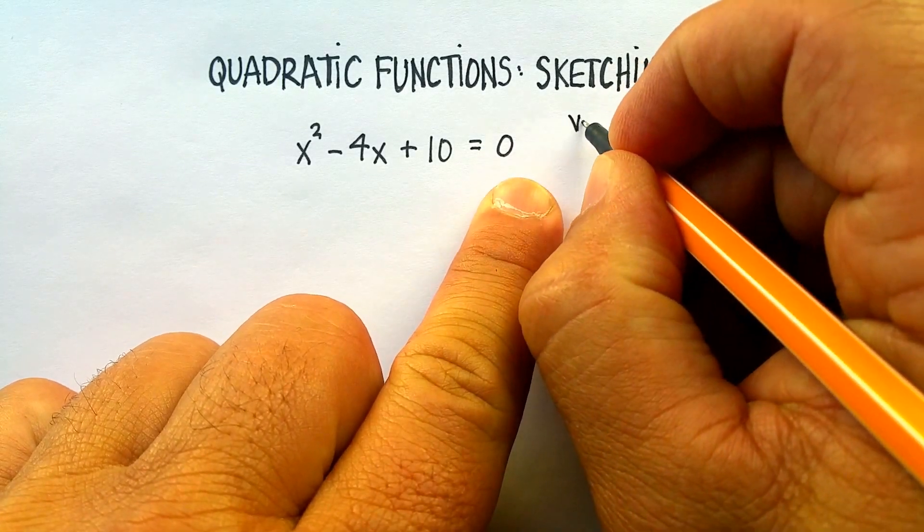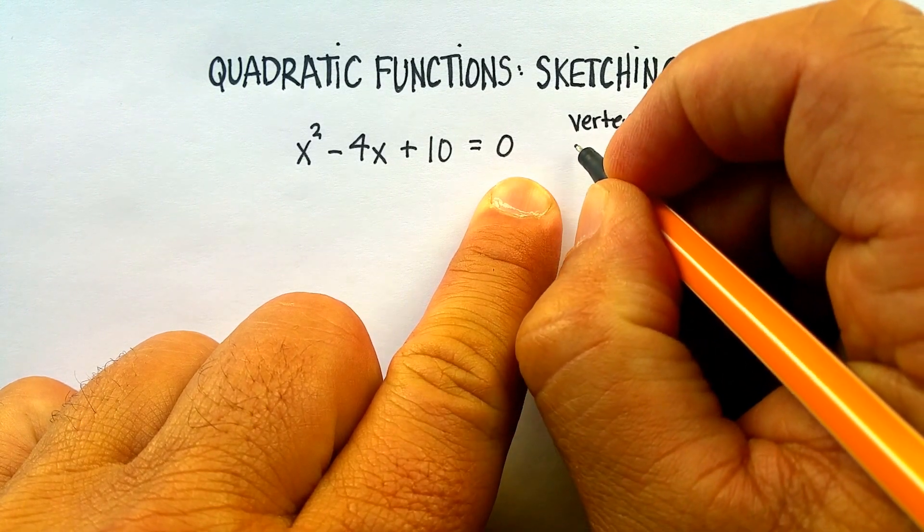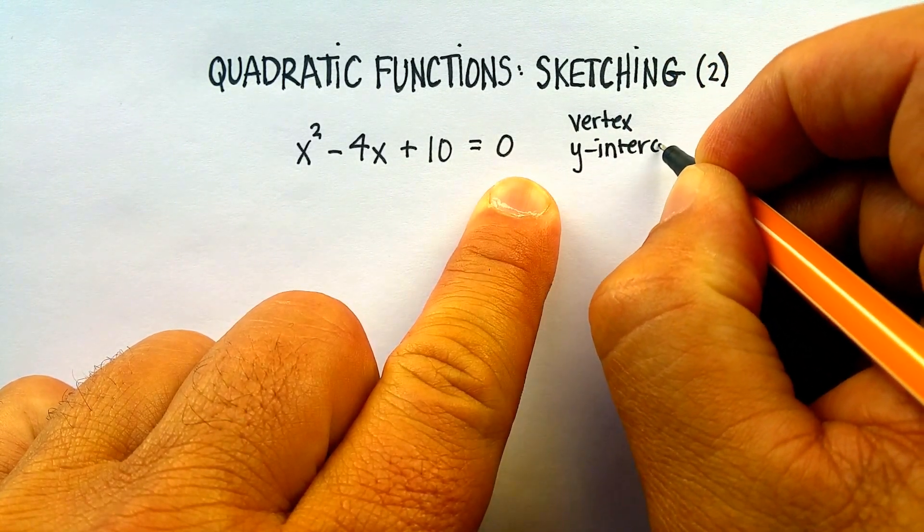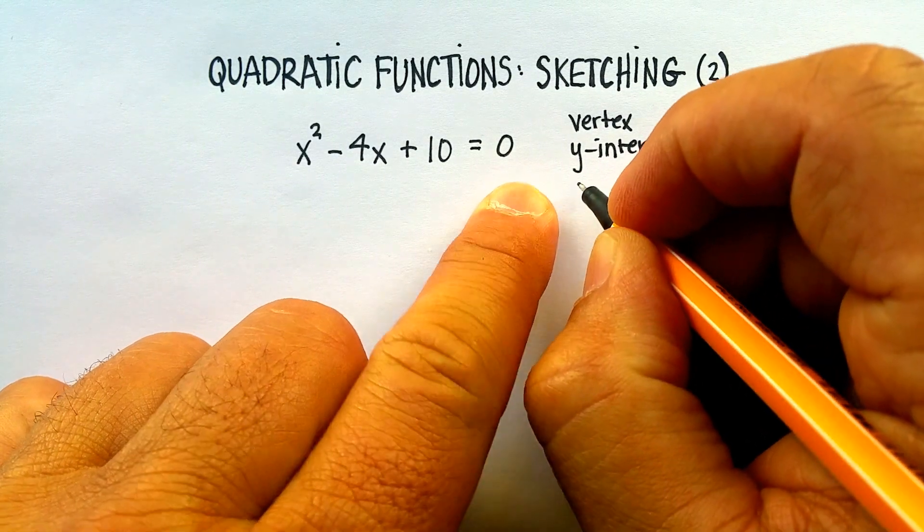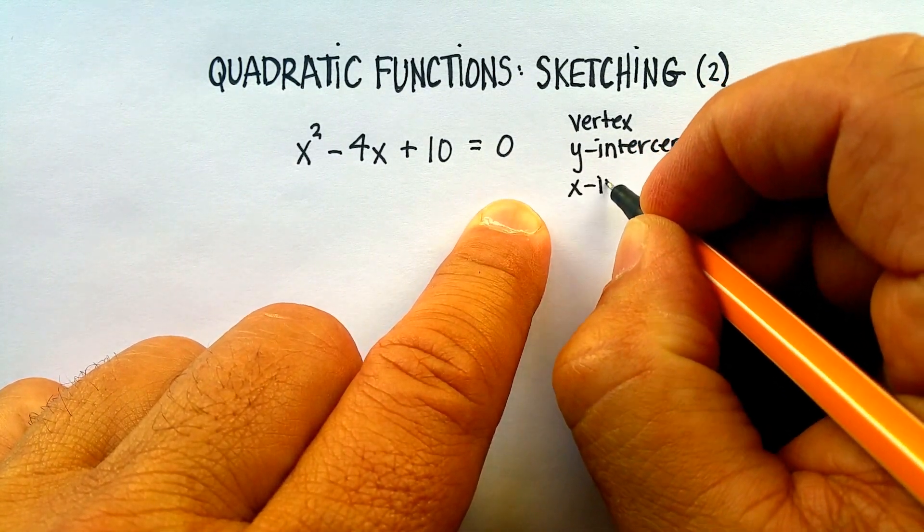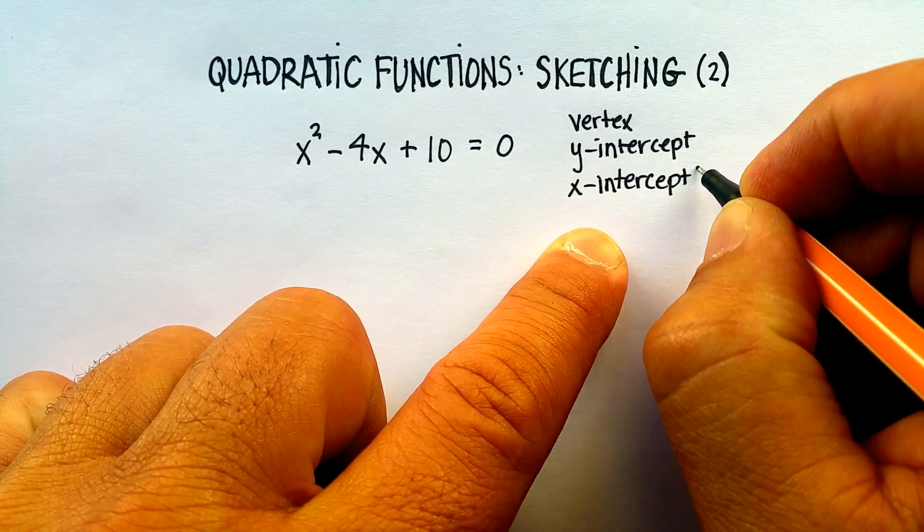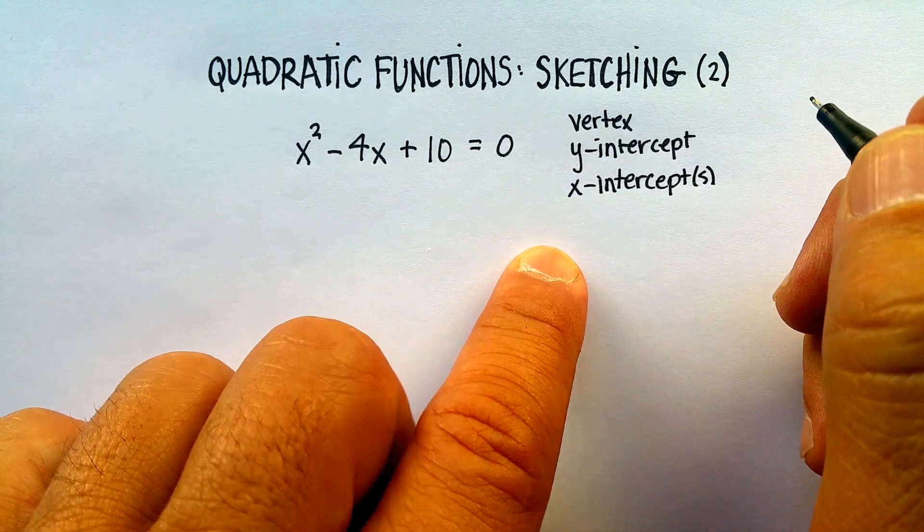What are those points? You're going to identify the vertex, the y-intercept, the x-intercepts, possibly plural, and we'll figure out why in a second.